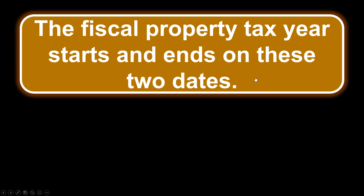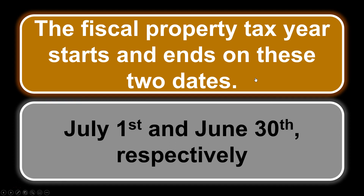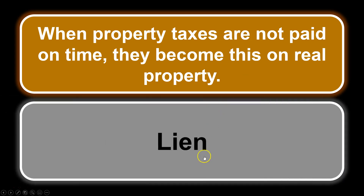The fiscal property tax year starts and ends on these two dates. Property taxes use a fiscal tax year, not a calendar year. The start date is July 1st and the end date is June 30th. When property taxes are not paid on time, they become an encumbrance on the property — specifically a lien, since it's an encumbrance based on money. So unpaid property taxes become a lien on the property.